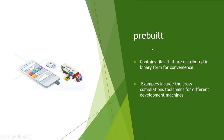Next we'll see Pre-built. The Pre-built directory contains files that are distributed in binary form for convenience. All such files are present under the Pre-built directory — for example, it includes cross-compilation toolchains for different development machines.